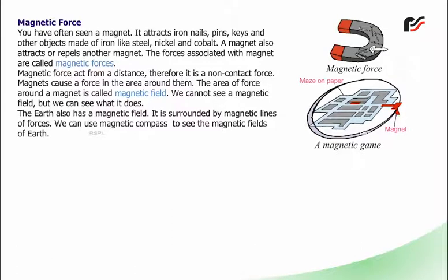Magnetic force: A magnet attracts iron nails, pins, keys, and other objects made of iron, steel, nickel, and cobalt. A magnet also attracts or repels another magnet. The forces associated with a magnet are called magnetic forces. Magnetic force acts from a distance. Therefore, it is a non-contact force. Magnets cause a force in the area around them. The area of force around a magnet is called a magnetic field. We cannot see a magnetic field, but we can see what it does. The earth also has a magnetic field and is surrounded by magnetic lines of force. We can use a magnetic compass to see the magnetic field of the earth.